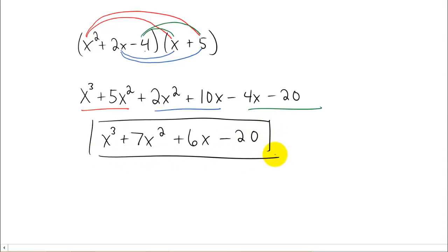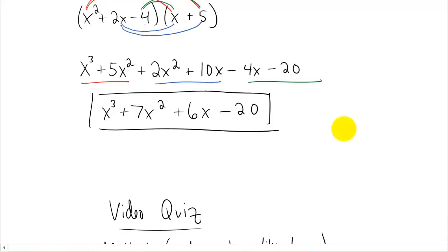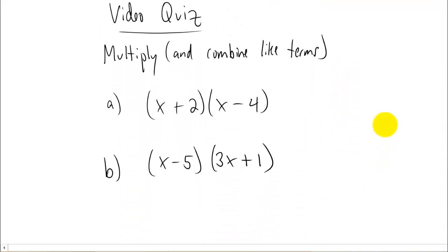Alright, let's box that thing up and get you a video quiz. Here it is. I have two sets of binomials to multiply out. Remember you're going to be using that FOIL technique to multiply these things out. And don't forget to combine your like terms at the end to simplify. Alright, see you in the next video.